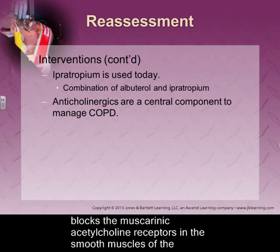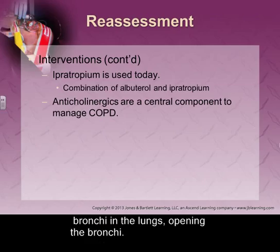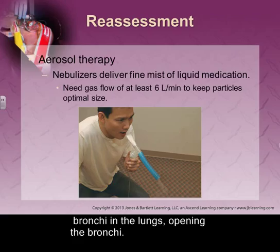Ipratropium is a combination medication — it contains albuterol and ipratropium. Albuterol provides your beta-2 properties, and ipratropium is your anticholinergic, so it's going to help drive those secretions out. Anticholinergics are a central component to management of COPD because patients have excessive secretions and they're not able to clear them.